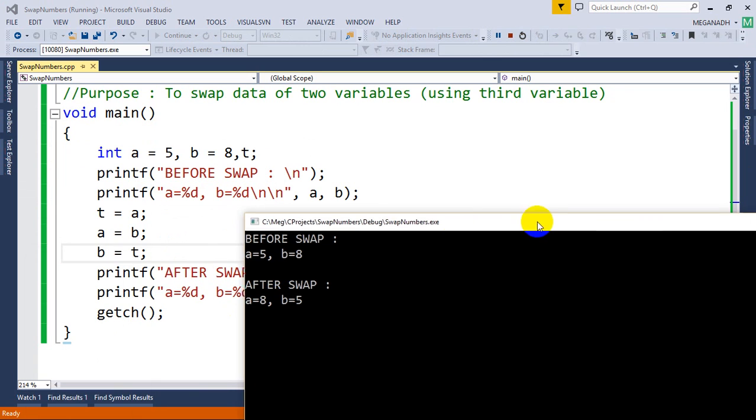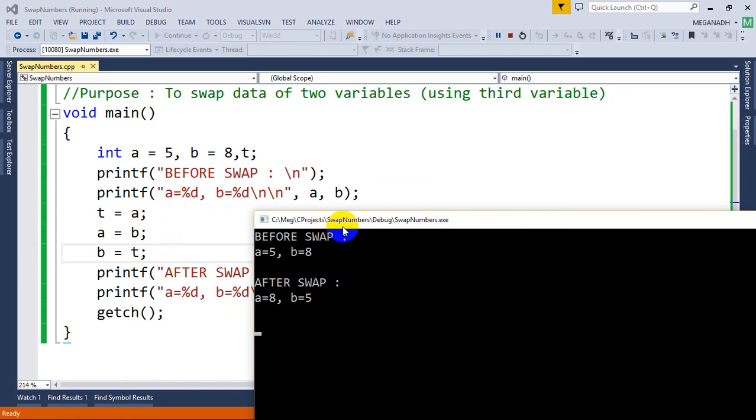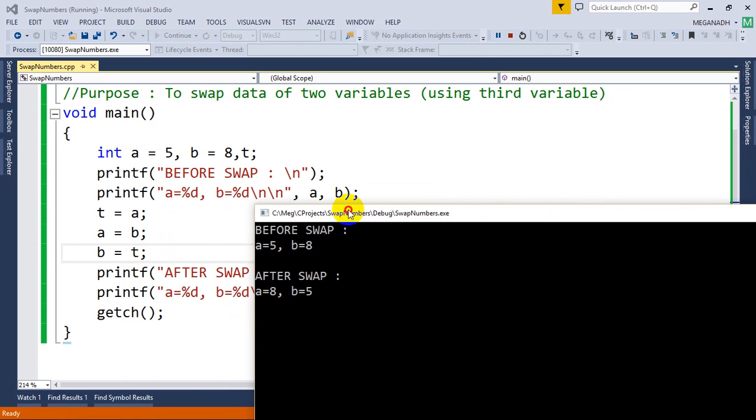Now you can see here that before swap, a and b values are what we assigned and that is 5 and 8. You can see here after swap this logic gets executed and now we have 8 and 5. So a value is 8 and b value is 5.